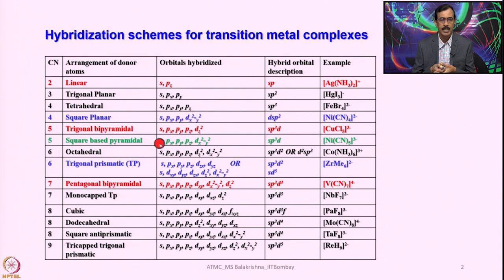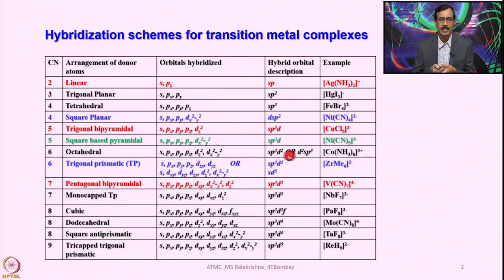In the case of octahedral, we use SP3D2 for outer orbital complexes or D2SP3 for inner orbital complexes. I have given one example — hexaamminecobalt — and there are numerous examples for both inner orbital and outer orbital complexes.